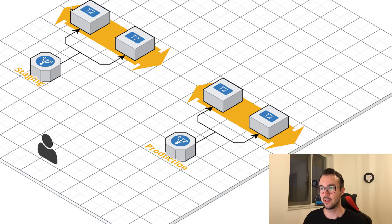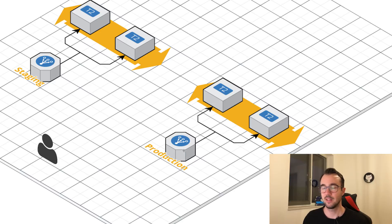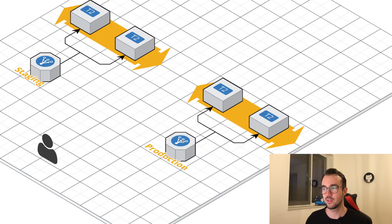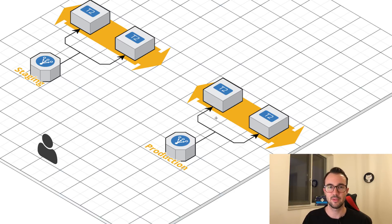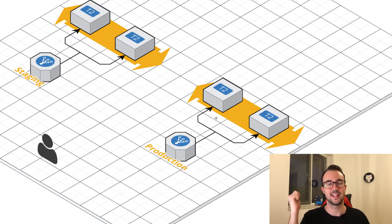Behind the staging load balancer there's an auto-scaling group with two instances - our staging environment that can scale out based on CPU. We also have the same for production: a production load balancer with two different instances behind it. This is a very simple but solid setup, and I'm not going to spend the whole video setting it up since it's not the focus here.